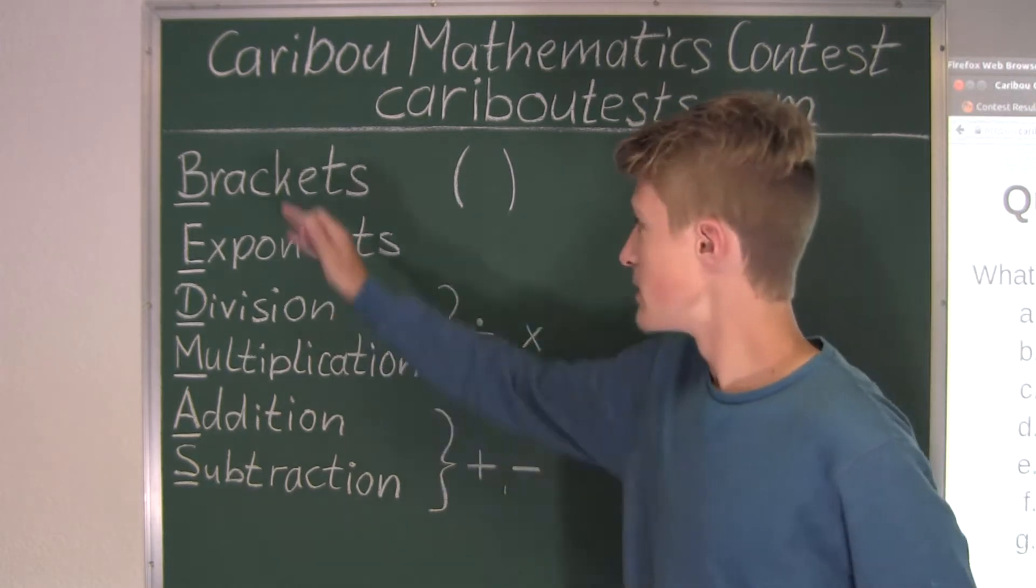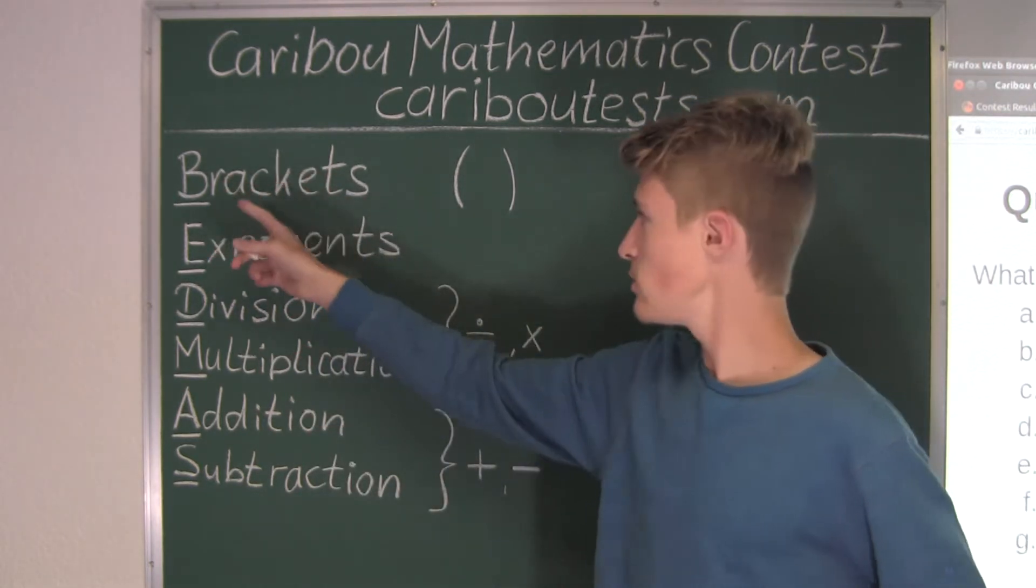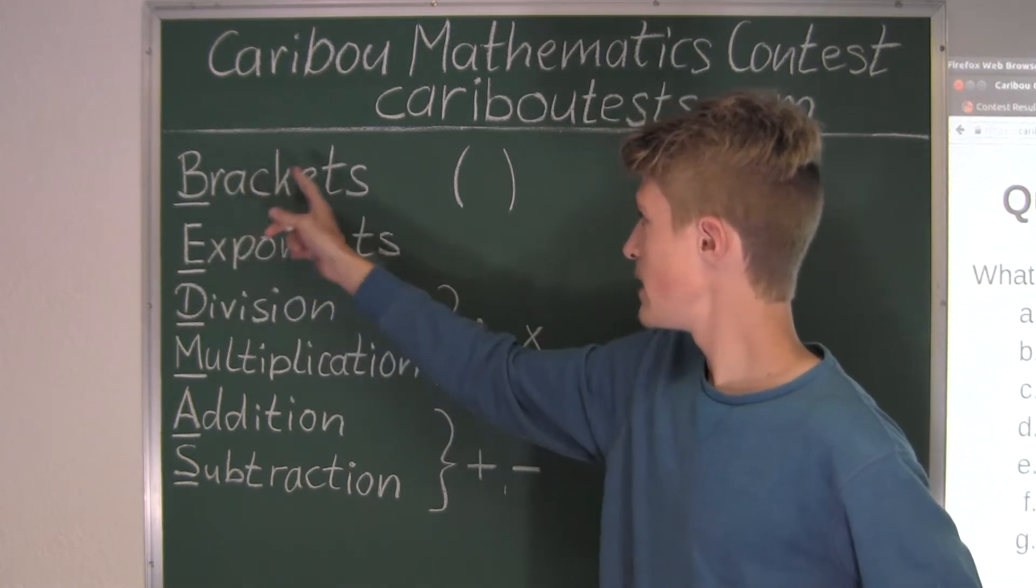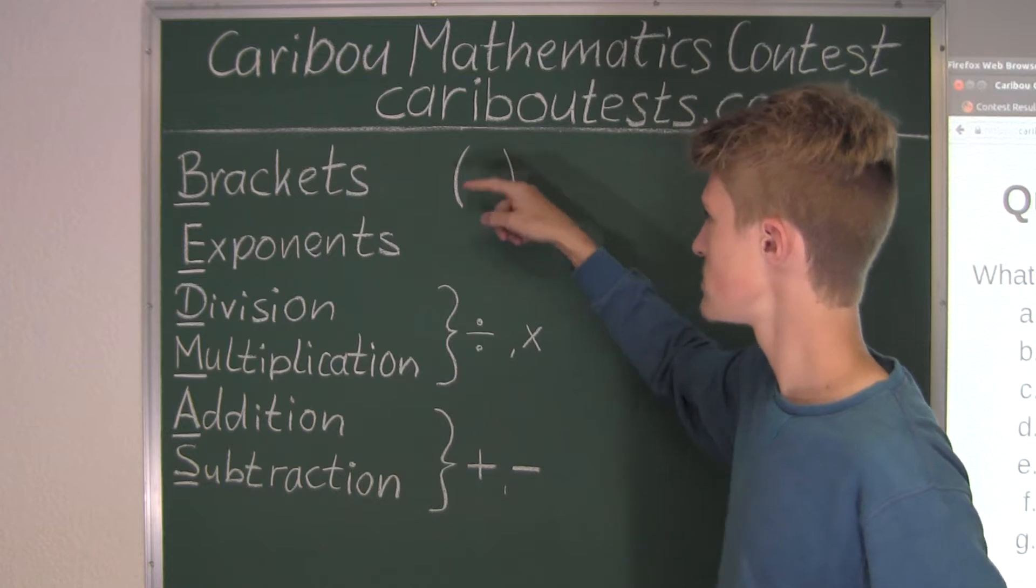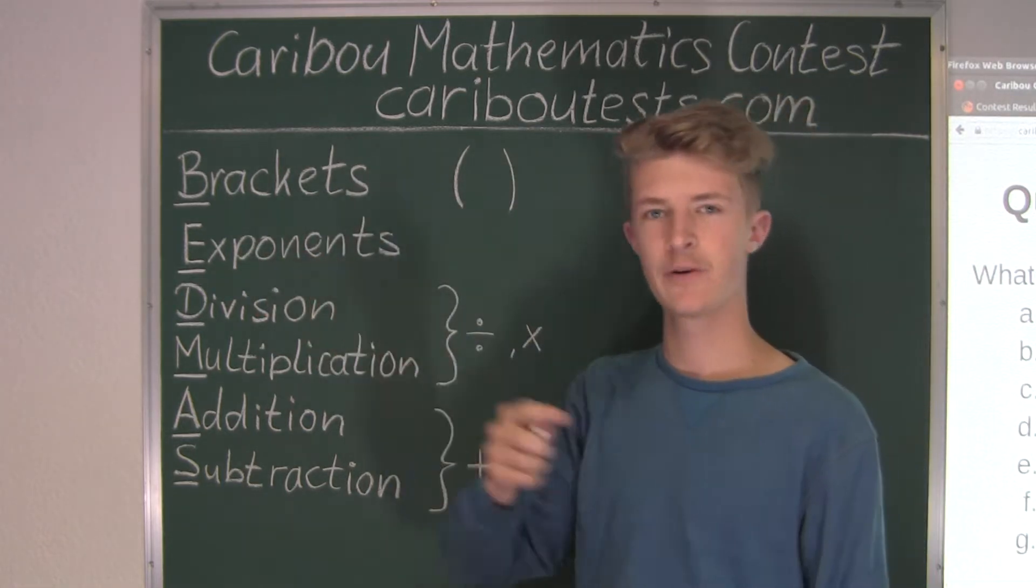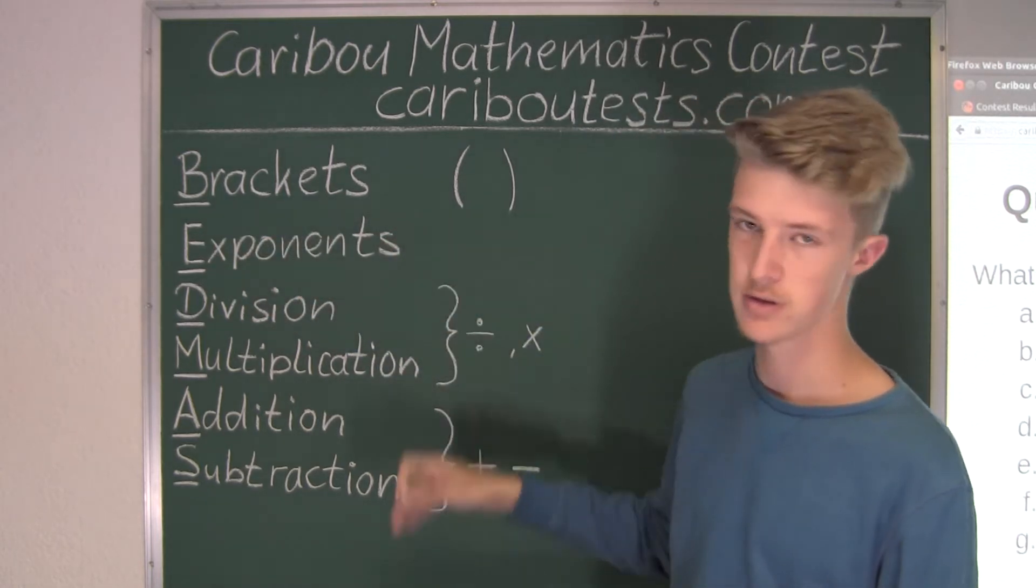So, from the top to the bottom is what has the first priority. So, anywhere you see the brackets in an expression or an equation, you need to do that first, whatever is in those brackets. Then next, we have exponents, but for this expression, we don't need to worry about exponents, so let's forget about exponents.